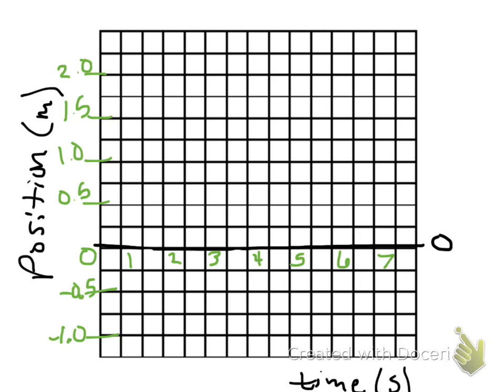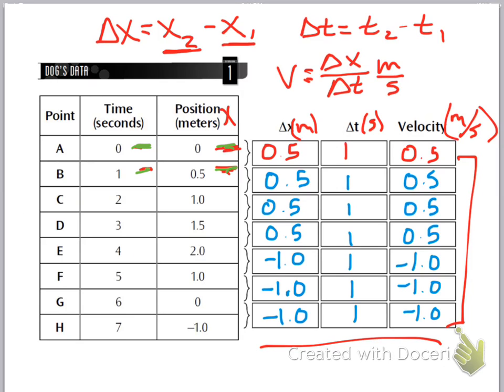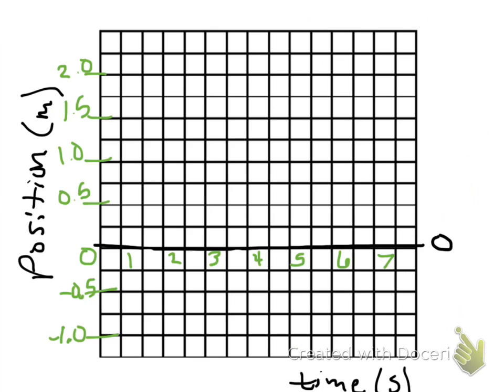If we go through and plot this — here is my setup for the plot — we can see that position goes up by half a meter up until 4 seconds. So at 4 seconds we are at 2 meters. That means at 1 second we were at half a meter, at 2 seconds we were at a meter, at 3 seconds we were at 1.5 meters. And then something happens.